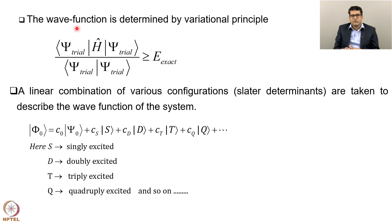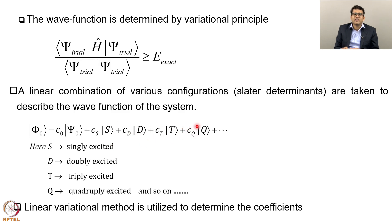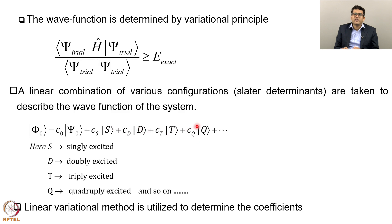The full CI wave function is expressed as a linear combination of singly excited, doubly excited, triply excited, and so on. The Slater determinants corresponding to each configuration are already known because they are generated by excitation from the Hartree-Fock reference determinant. What is unknown are the configuration coefficients, the linear combination coefficients, and we use the linear variation principle to determine these coefficients.